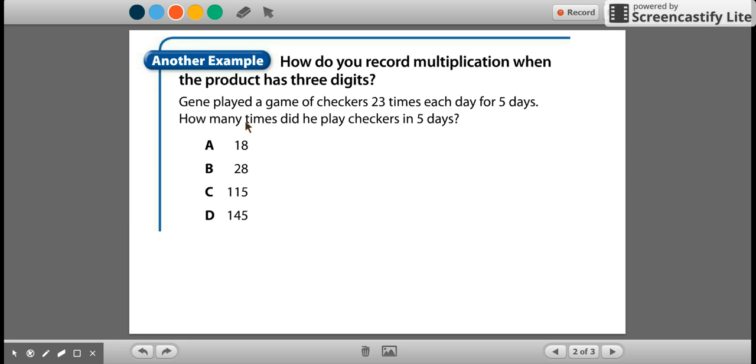So now the next problem is Gene played a game of checkers 23 times each day for five days. How many times did he play checkers in five days? And they're asking you, how do you record multiplication when the product (the answer—remember the product means answer) has three digits? This multiple right here is a two-digit number, and this multiple right here is a one-digit number.